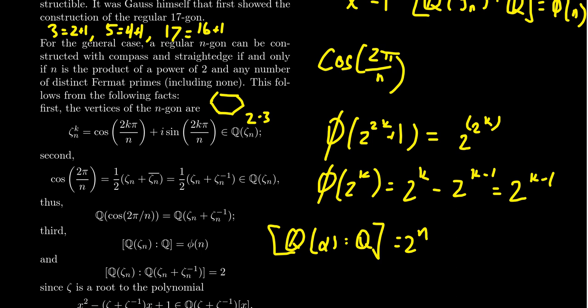You could also construct 12, a 12-sided figure, a dodecagon, because 12 is 4 times 3. We could construct a 20-gon because 20 is 4 times 5, like so. But 17 was this really cool one that Gauss was able to produce.